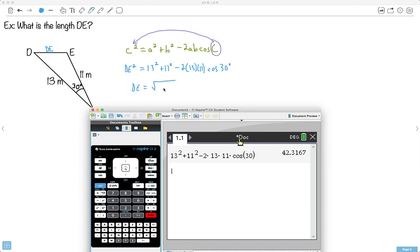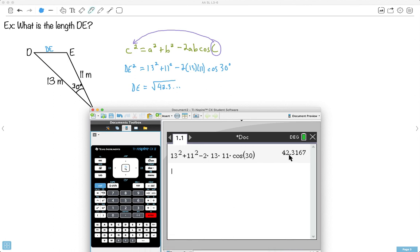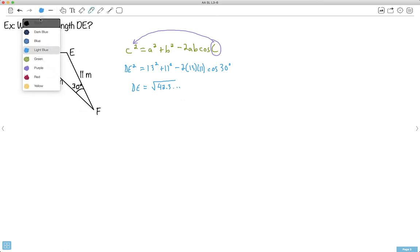Now keep in mind, that's not my answer. That's what DE squared is. So it's like the square root of 42.3-ish. But it's not exact. The exact answer is here. So I'm going to take the square root of that answer. And now I have 6.505. So 6.51, let's just say. So DE is approximately equal to 6.51. That's the three significant figures. That's it. We're done.